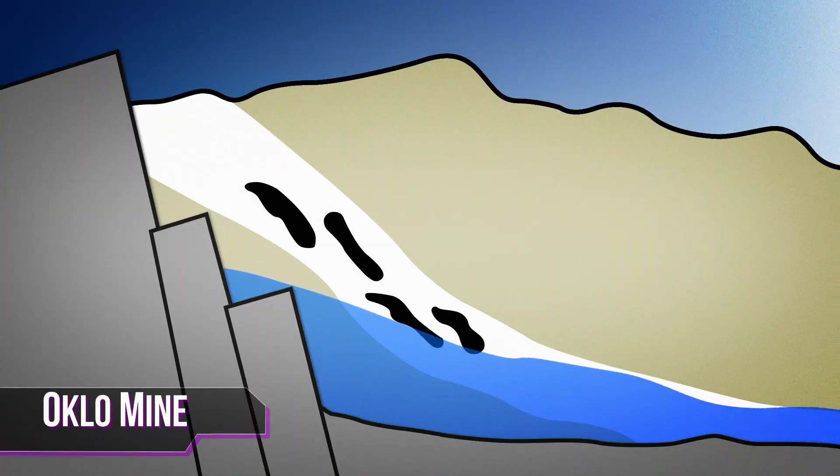But this didn't happen at Oklo, because the deposit also had the third major ingredient, a way to control the reaction. The Oklo deposit was full of water. Groundwater, to be precise, which continuously flowed into the site, slowing the neutrons down enough that they had time to hit other atoms of uranium-235 and keep the chain reaction going.